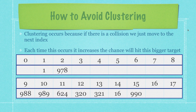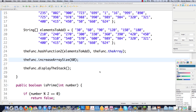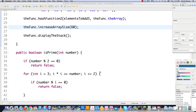Now let's get into avoiding clustering. Clustering occurs because when there's a collision, we just move to the very next index and put the value there. The problem is, each time this occurs, it increases the likelihood of hitting one of those big clusters when inserting another value later. That's why you end up with arrays where nothing is in one part and everything is bunched up in another. That is bad and should be avoided.